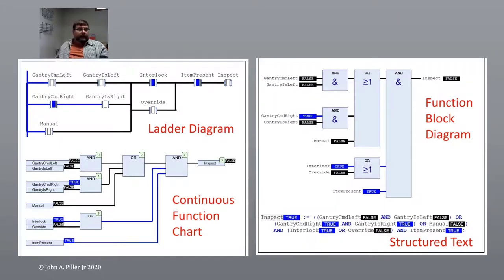Again, some more looking at more difficult ladder logic here, more complicated. So I could turn this on manually or the gantry right is true and the gantry right is true. And that inspects out. Here's some continuous function chart again, going through here, function blocks going through and some structure. All of this is doing the same logic.